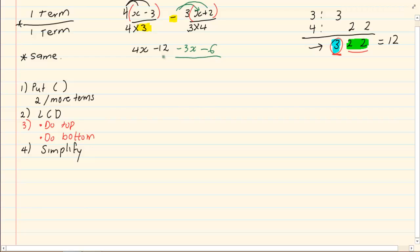All over 12. Why you can write it under one denominator is because they are the same. 4 times 3 is equal to 12 and 3 times 4 is equal to 12. When they have the same denominator, then only can I write it under one denominator.